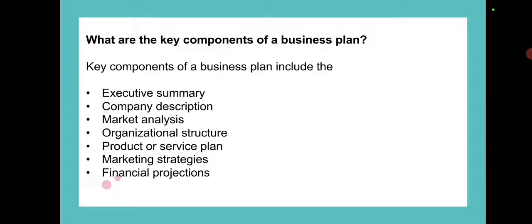Organizational structure describes the structure of the business — the roles people have and their responsibilities. Products or services describes what the business is selling and how it will benefit customers.